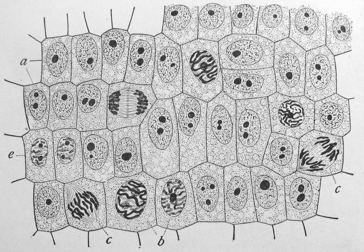The cell nucleus is the most conspicuous organelle found in a eukaryotic cell. It houses the cell's chromosomes and is the place where almost all DNA replication and RNA synthesis occur. The nucleus is spherical and separated from the cytoplasm by a double membrane called the nuclear envelope. The nuclear envelope isolates and protects a cell's DNA from various molecules that could accidentally damage its structure or interfere with its processing. During processing, DNA is transcribed, or copied into messenger RNA (mRNA). This mRNA is then transported out of the nucleus, where it is translated into a specific protein molecule. The nucleolus is a specialized region within the nucleus where ribosome subunits are assembled. In prokaryotes, DNA processing takes place in the cytoplasm.